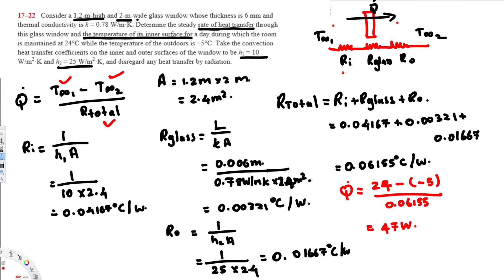In a series circuit, Q̇ is equal everywhere — just like current in an electrical series circuit. So the Q̇ between T∞₁ and the inner surface is still 471 W. This is important because we'll use it to find the inner surface temperature.